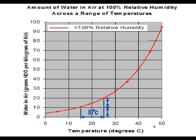Likewise, if we were to decrease the temperature, the amount of water which that parcel of air would be able to hold would also decrease. So if the air were moist, there would be rain or dew or some form of precipitation.